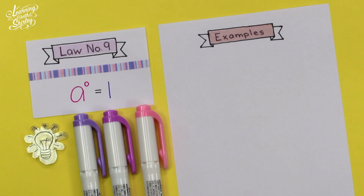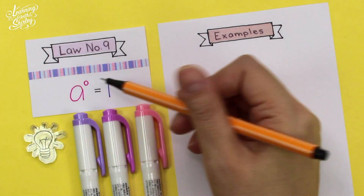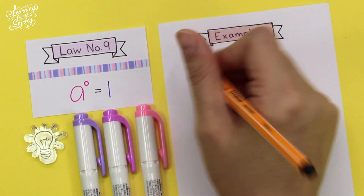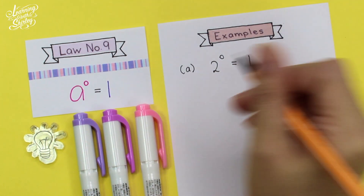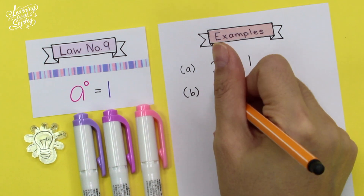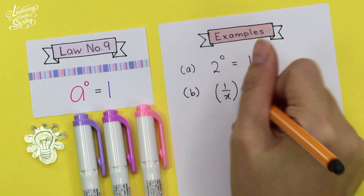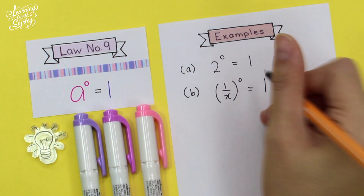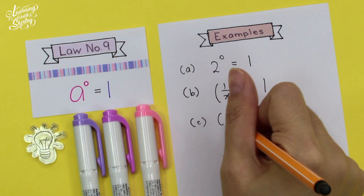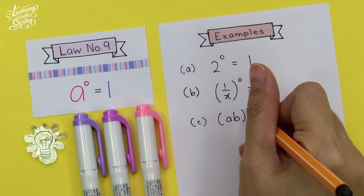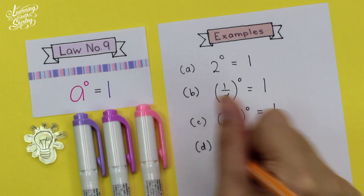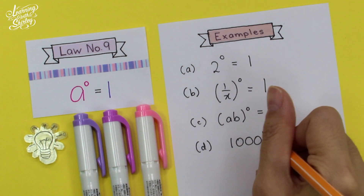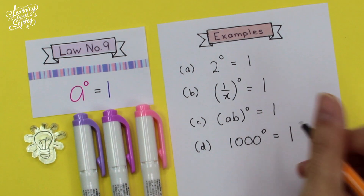For law number 9: any number to the power of 0 is 1 — a to the power 0 equals 1. So 1 over x to the power 0 is 1, a times b to the power 0 is 1, and 1000 to the power 0 is also 1.